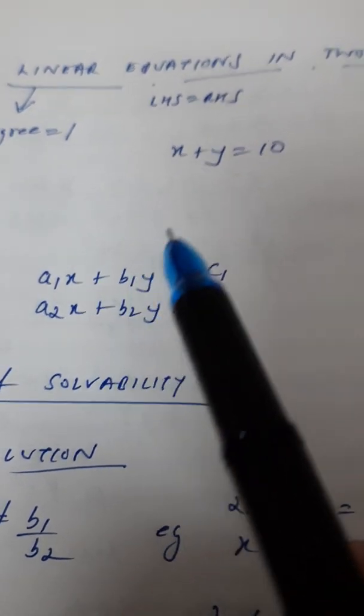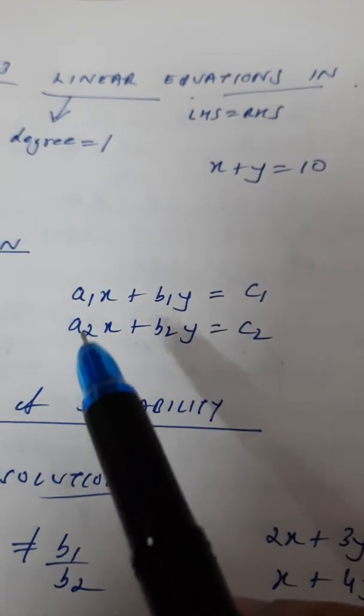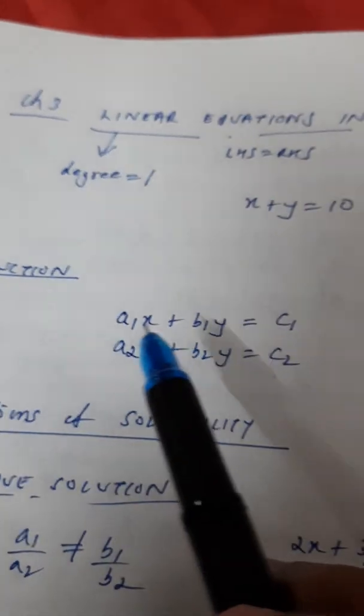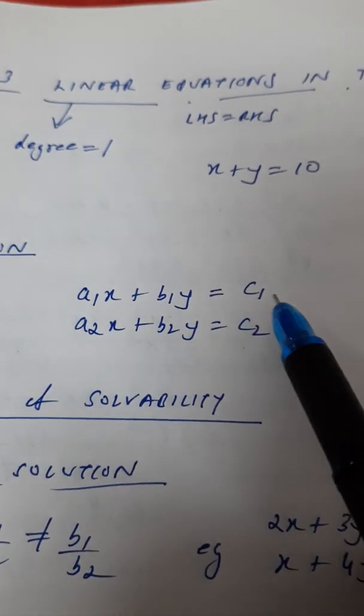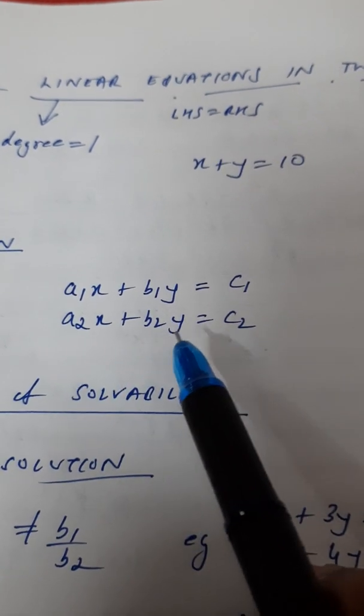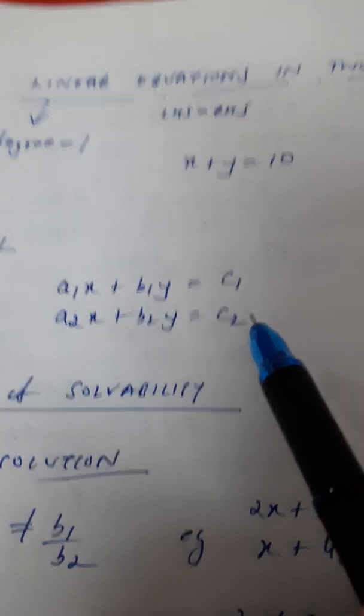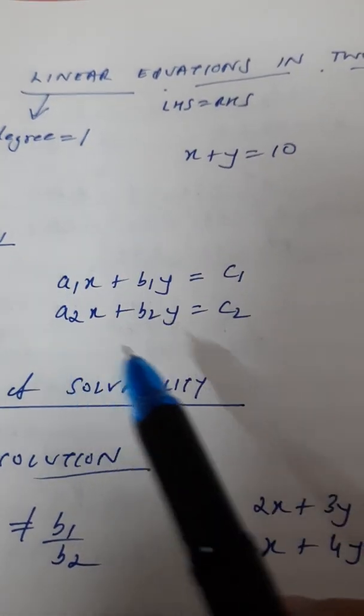But we are doing linear equation in two variables and we will be given two equations always. And the general form of this equation will be A1X plus B1Y equal to C1 and A2X plus B2Y equal to C2. So, you will always be given two equations and you have to solve that simultaneously to get an answer.